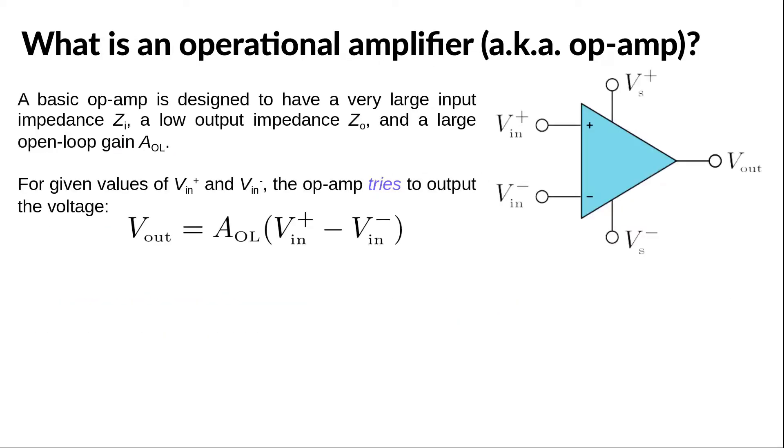A basic op-amp is designed in such a way that it has a very large input impedance, a low output impedance, and a large open-loop gain.